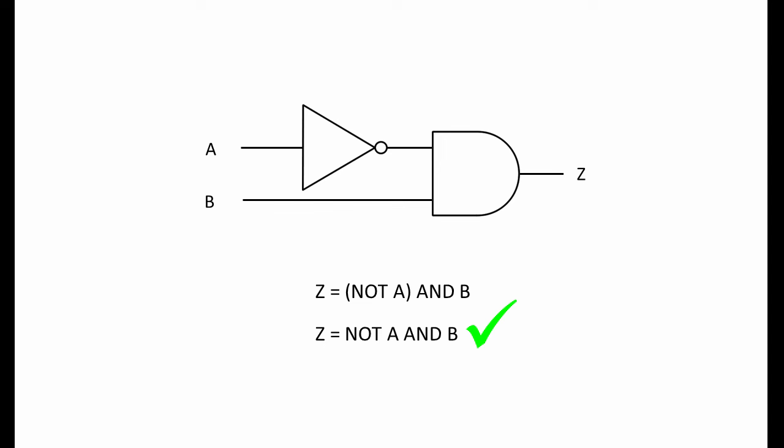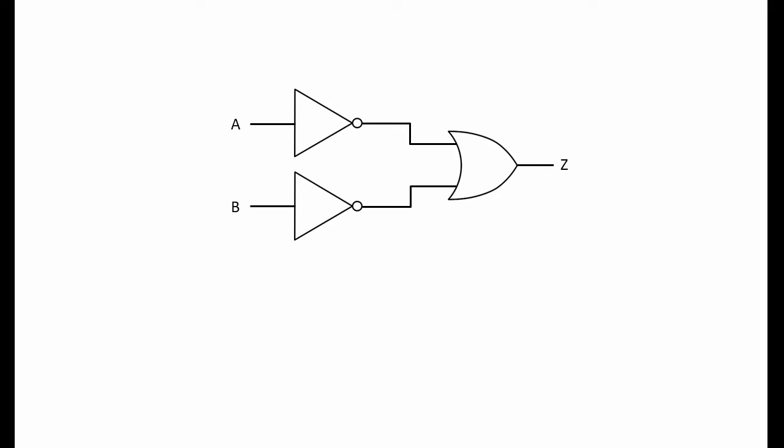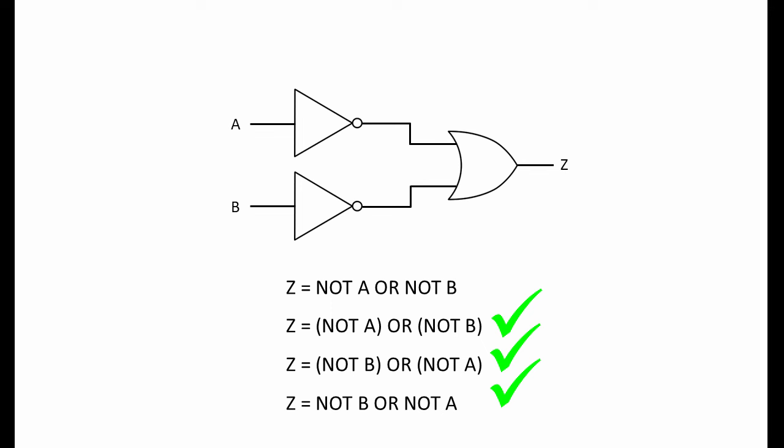Now take a look at this combination. Here is a valid expression. You can clearly see from the diagram that the NOT operations are performed first. First NOT A, then NOT B. Only then does the OR operation occur. You don't need brackets in this expression because NOT is the highest priority operation. But you can include them here if you wish. This version of the expression is perfectly valid and, arguably, somewhat clearer. This version is also valid: Z equals NOT B or NOT A rather than NOT A or NOT B. It doesn't matter which of the two NOT operations is performed first, as long as they have both happened before the OR operation. Indeed, this is also a perfectly valid way to describe this particular circuit.